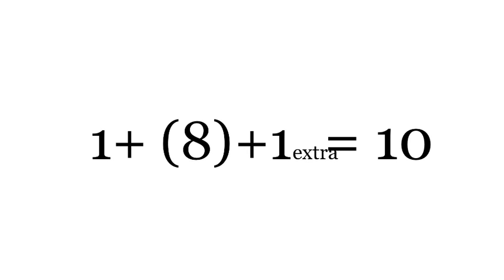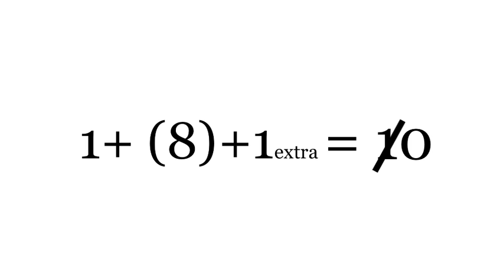To understand better, let's look at an example. 1 plus minus 1 equals 1 plus 8 plus the extra 1, which would equal 1, 0. Then if we ignore the leading digit, we get 0. Okay, so this works, but where does it come from?